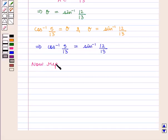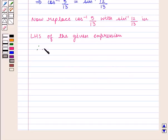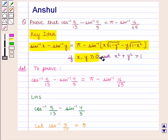Now replace cos⁻¹(5/13) with sin⁻¹(12/13) in the left-hand side of the given expression. Therefore, the left-hand side becomes sin⁻¹(12/13) minus sin⁻¹(4/5). From the key idea, sin⁻¹(x) − sin⁻¹(y) = π − sin⁻¹(x·√(1−y²) − y·√(1−x²)), provided both x and y are greater than 0 and x² + y² > 1.